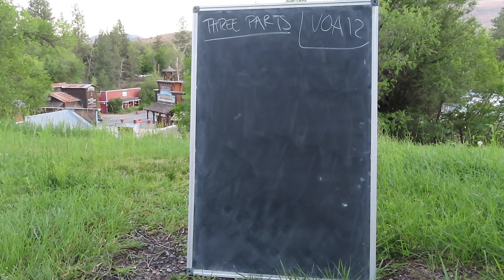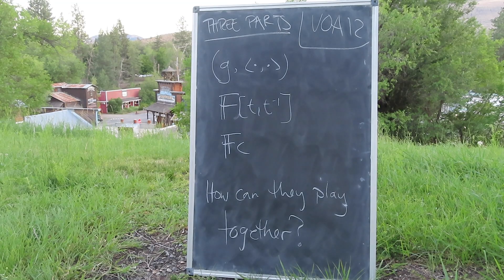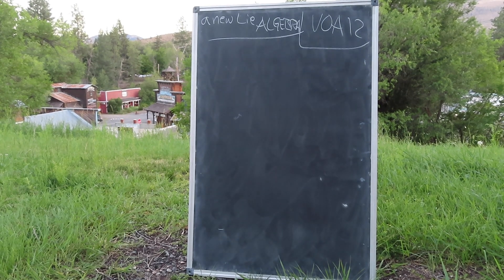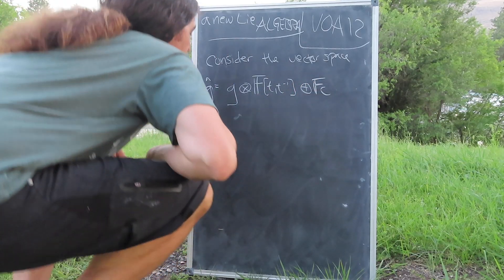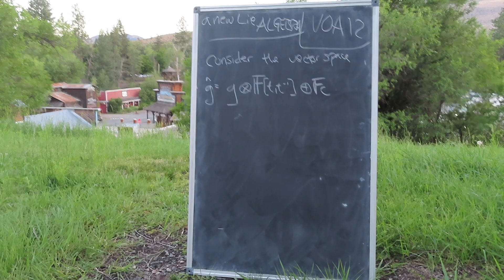Given these three constituent parts — the inner product, the Laurent polynomials, and a central extension — our task is to figure out how they play together. To that end, let's build a new Lie algebra. We'll start by considering the vector space made up by combining these three algebras together: G times the Laurent polynomials in t, extended by the central charge C. Let's call this space G-hat.